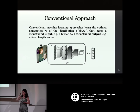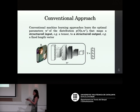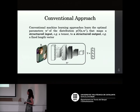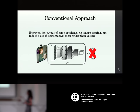In classic deep neural networks, you optimize parameters W with respect to a structured input X — for example, an image — to perform a task defined as a fixed-length output Y. But what happens if the output is not a classification task with a fixed number of classes, but instead something like tags that cannot be expressed as vectors?